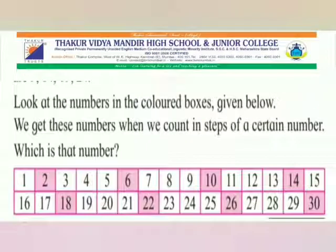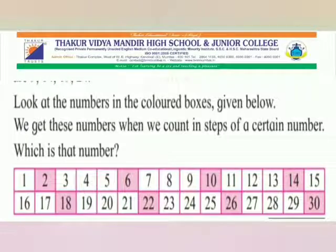Now look at the numbers in the colored boxes given below. We get these numbers when we count in steps of a certain number. Which is that number? Here, the box of number 2 is colored. The next colored box is number 6. If we move from number 2 by counting 3, 4, 5, and 6 — so children, we moved how many steps? Yes, 4 steps.